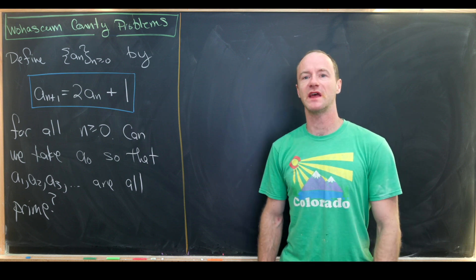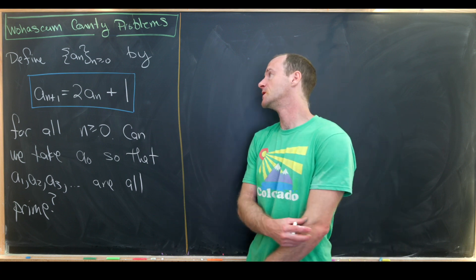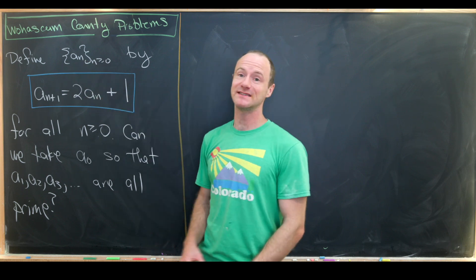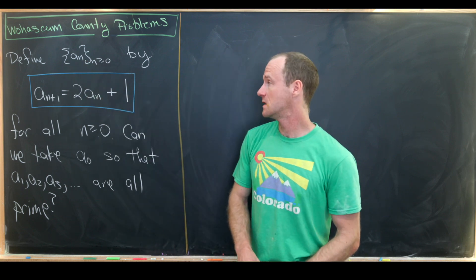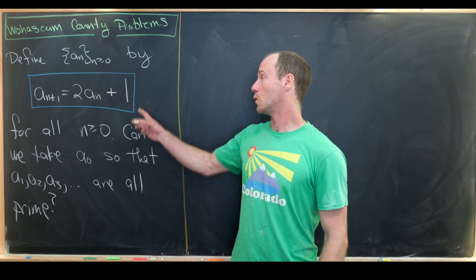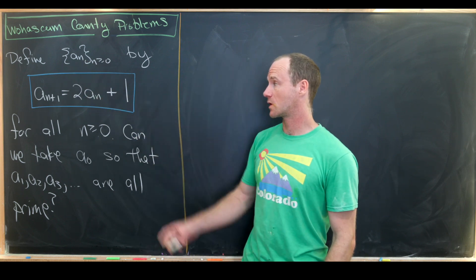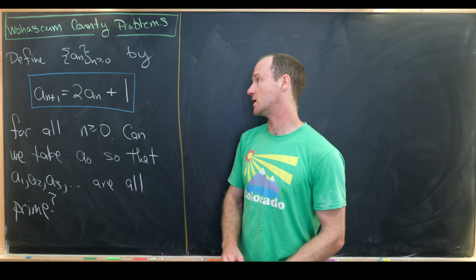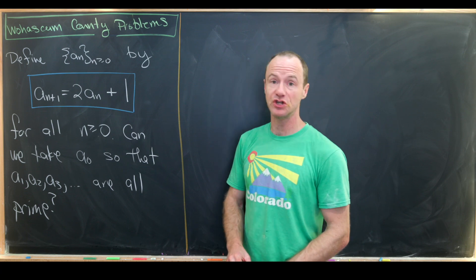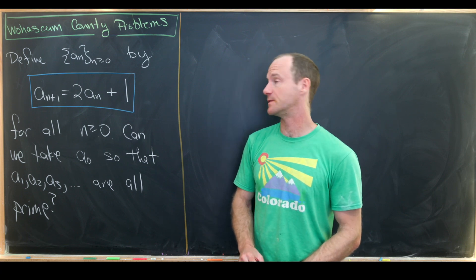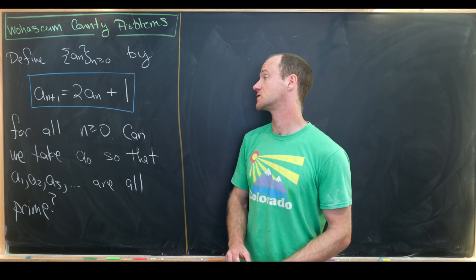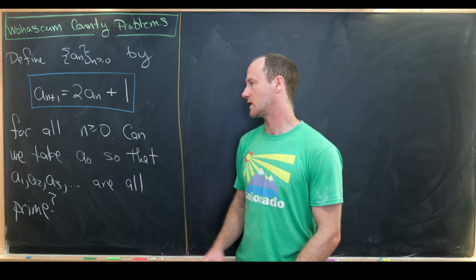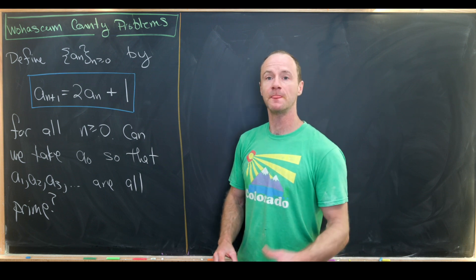Let's see what we have here. We want to define a sequence a_n by the one-step recursion a_{n+1} equals two times a_n plus one, and that's for all n greater than or equal to zero.